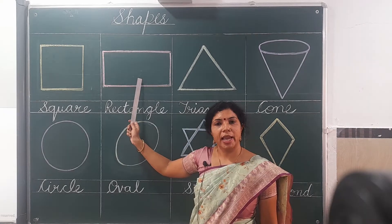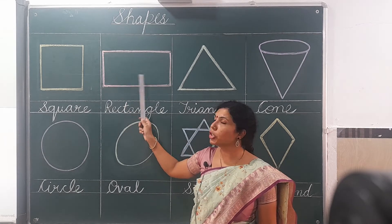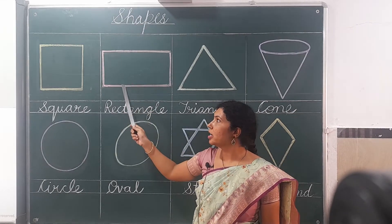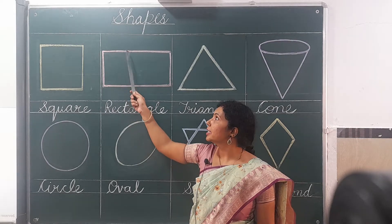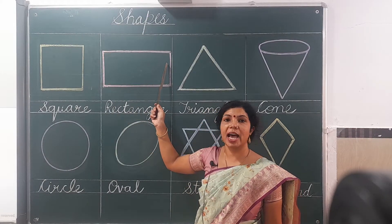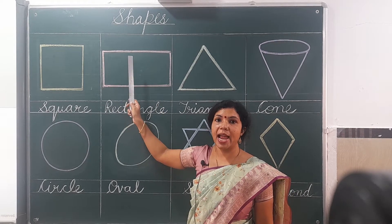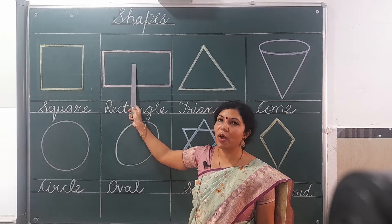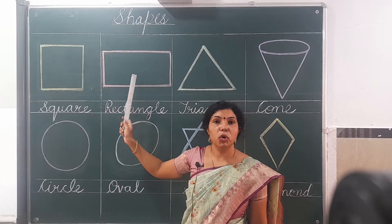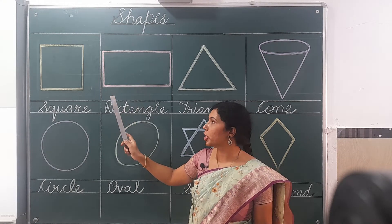This is another shape. It is also just like a box, but the upper side and down side are equal, and the left side and right side are equal to each other — but not all four equal. So we can say this is not square; it is called rectangle shape.